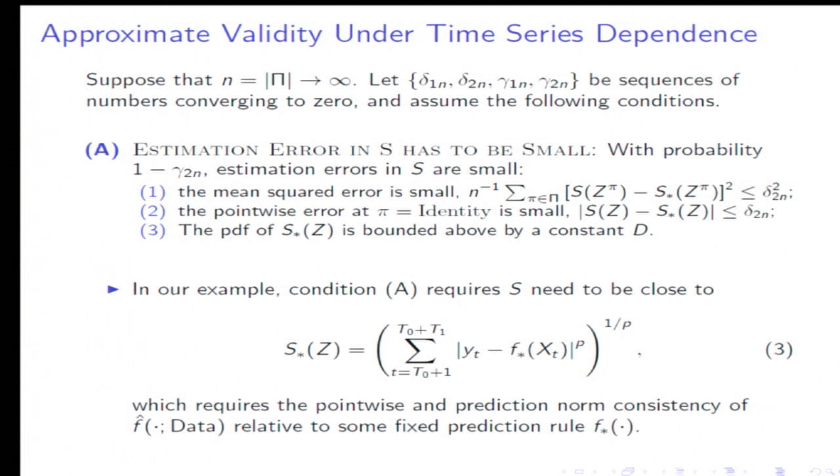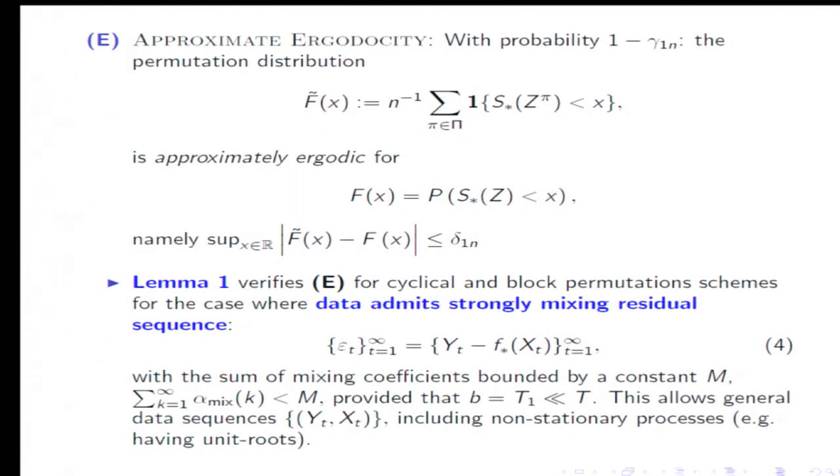We need S to be close to S star. And once we did this replacement, we're going to require that the permutation distribution of this statistic S star has to be approximately ergodic for the true distribution of S star. So the two distributions have to be close.